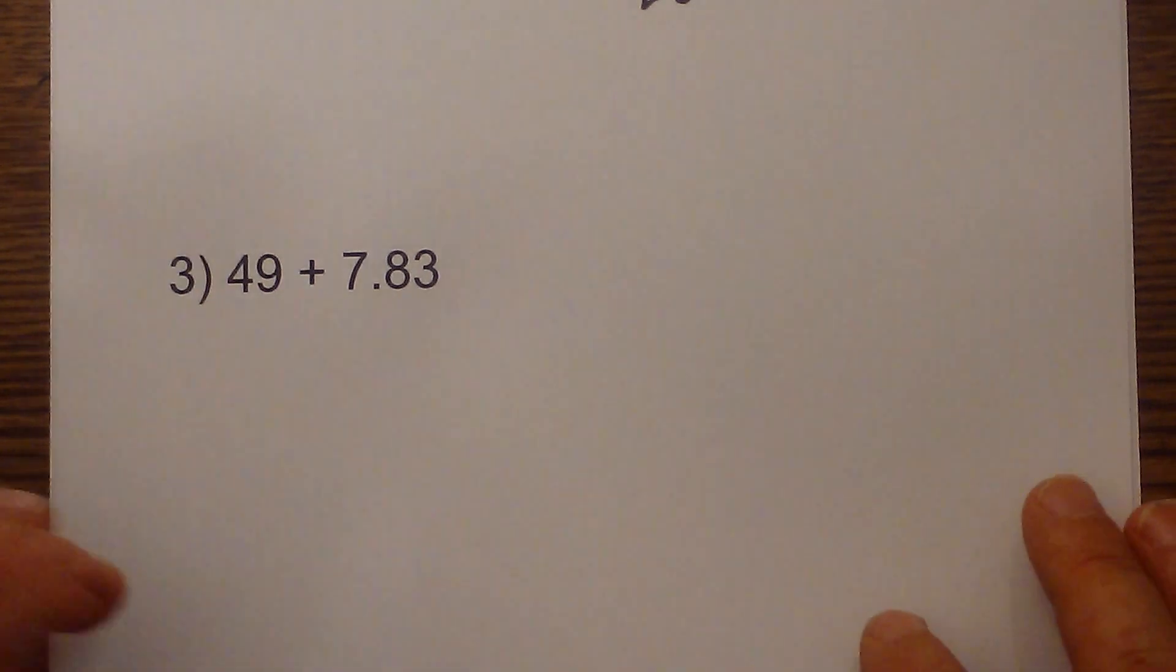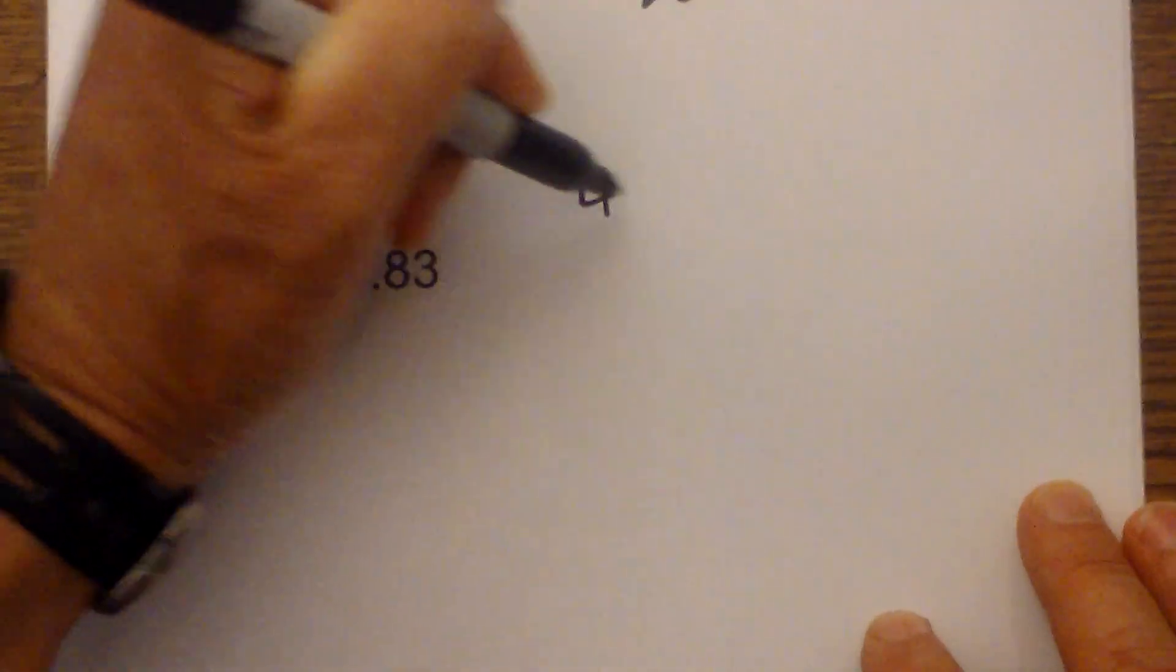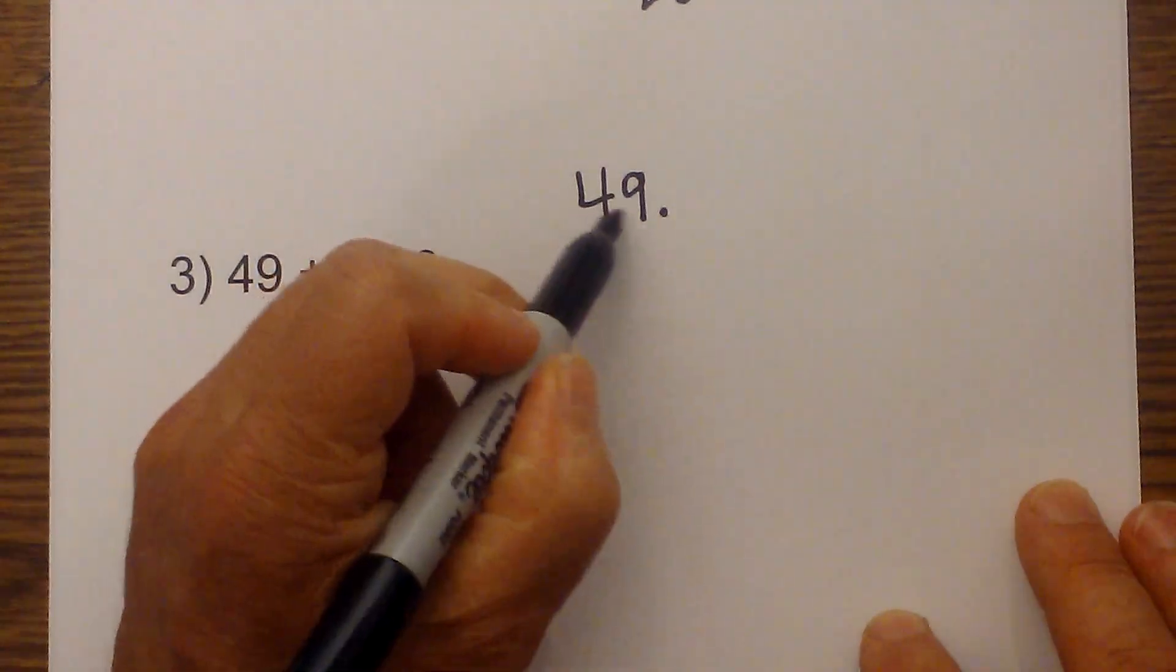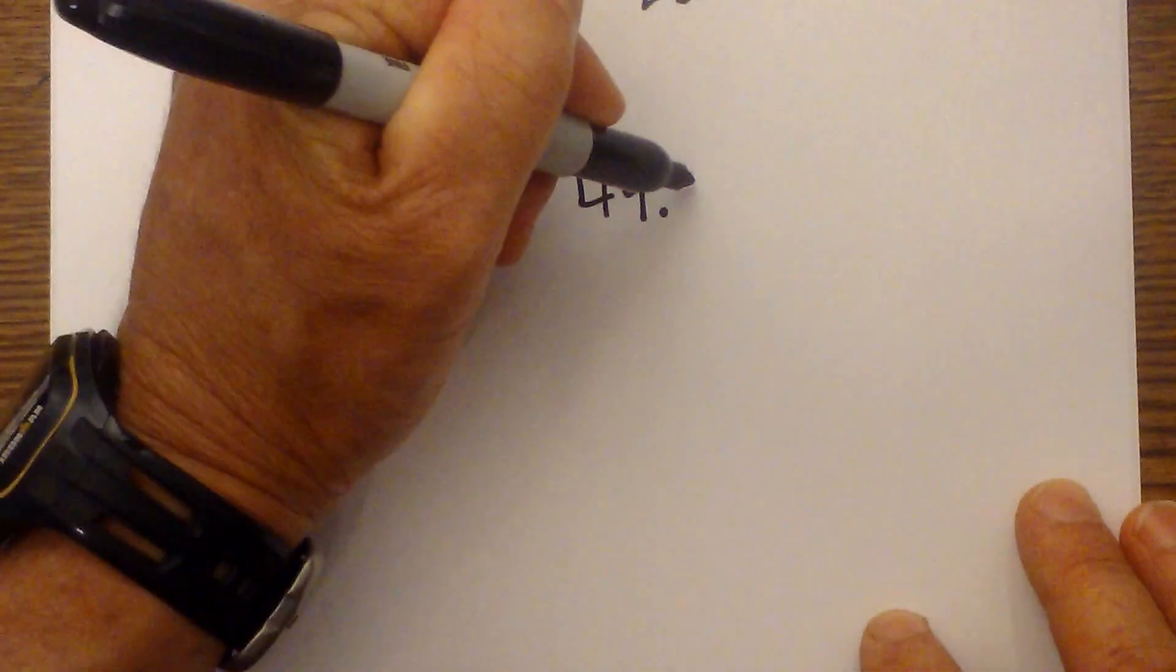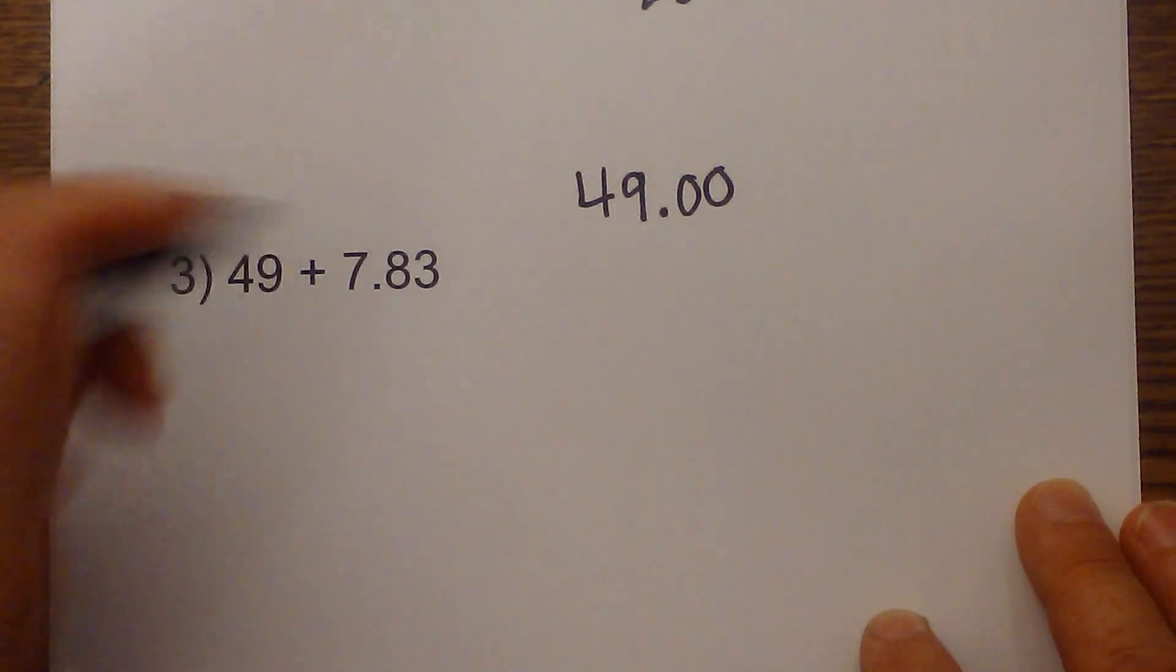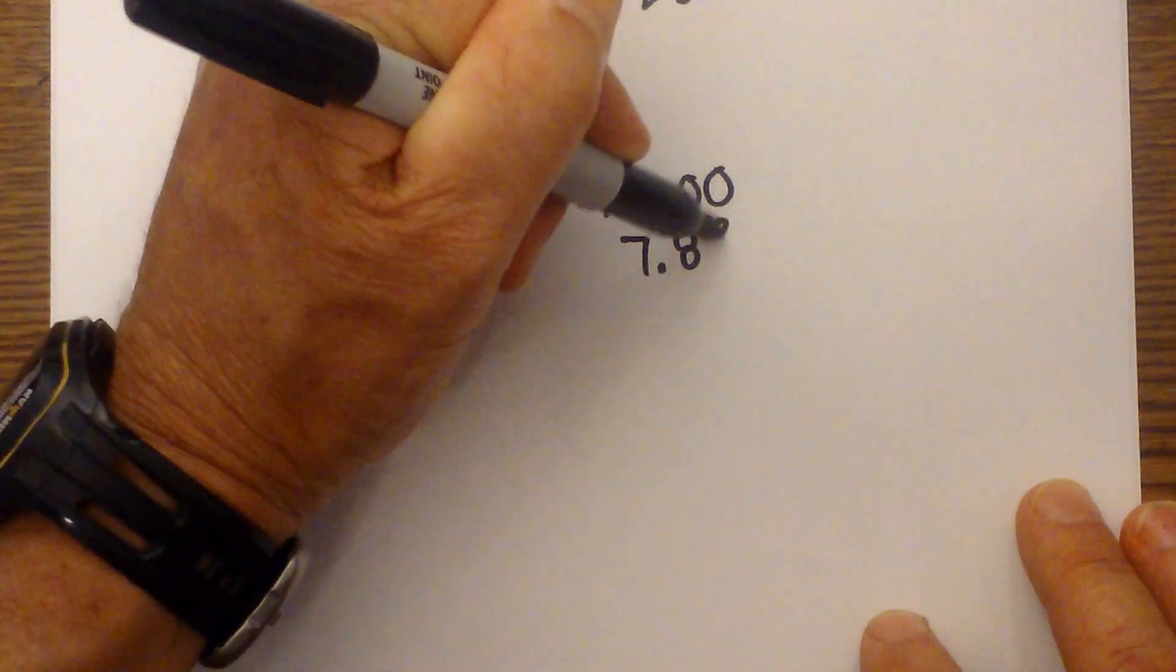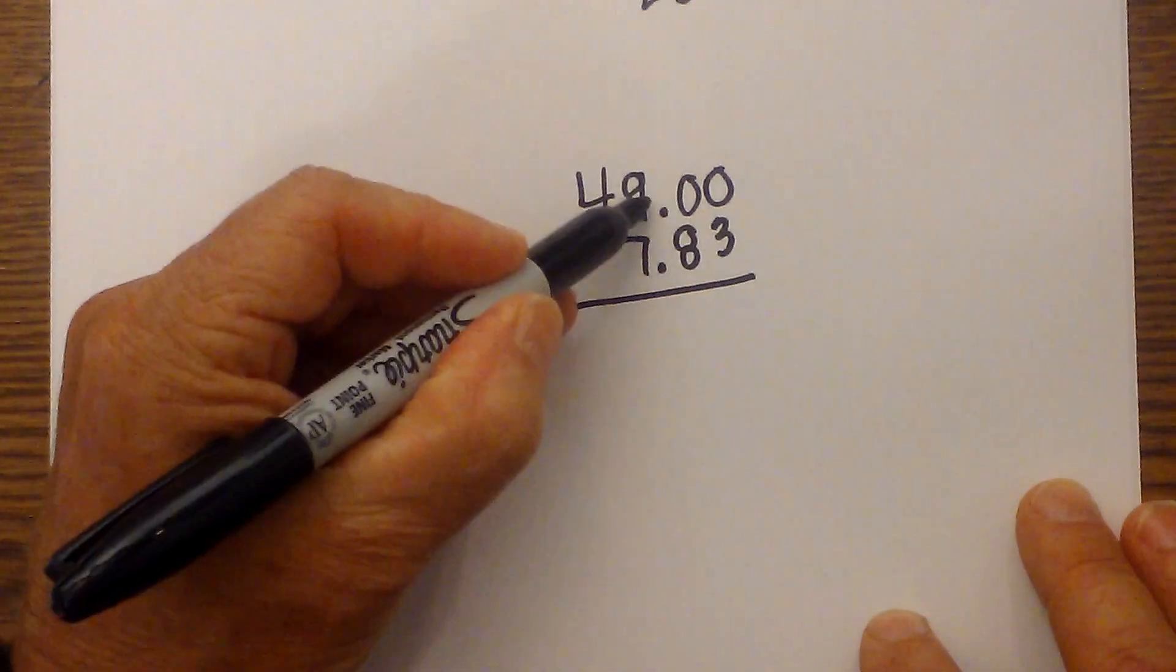Let's look at another addition. Forty-nine, and I'm going to go ahead and write a decimal there because we know any number where there's not a decimal, it's always at the end. I'm going to add a couple zeros, and then we have 7.83. Notice that the decimals are lined up.